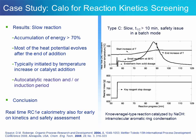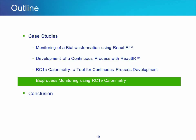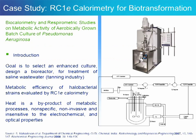The next example is an application of RC1 calorimetry for a kind of project for which it is not well known, yet extremely valuable. This case study, published in two recent biotechnology papers, describes the monitoring of P. aeruginosa activity. The goal was to develop a better strain to help reduce pollution from the tanning industry. In this case, heat measurement using the RC1 shows its full benefit as it is non-invasive and does not require sampling.